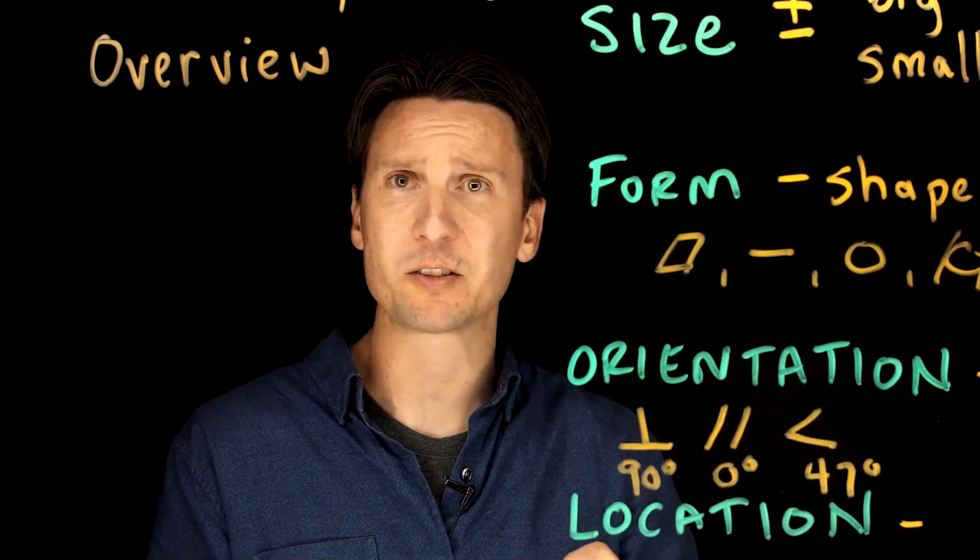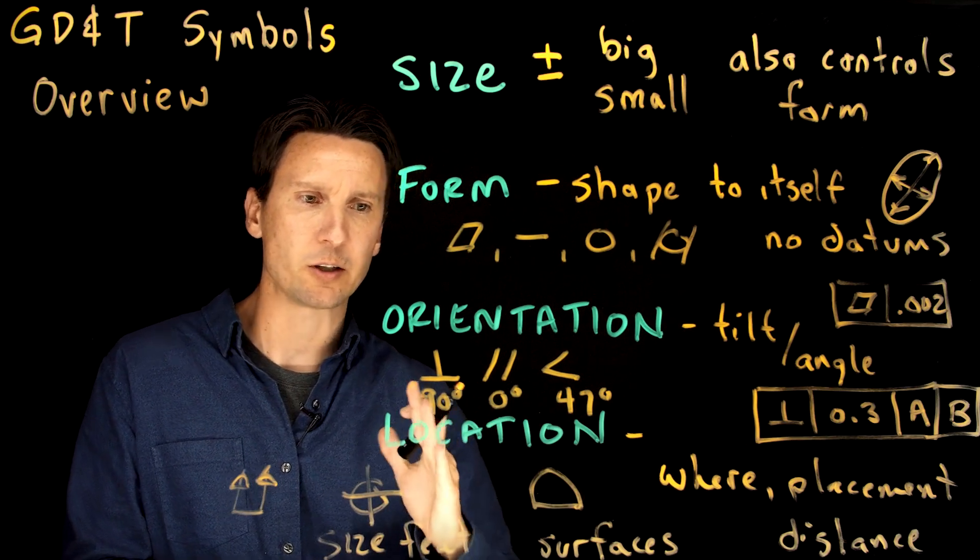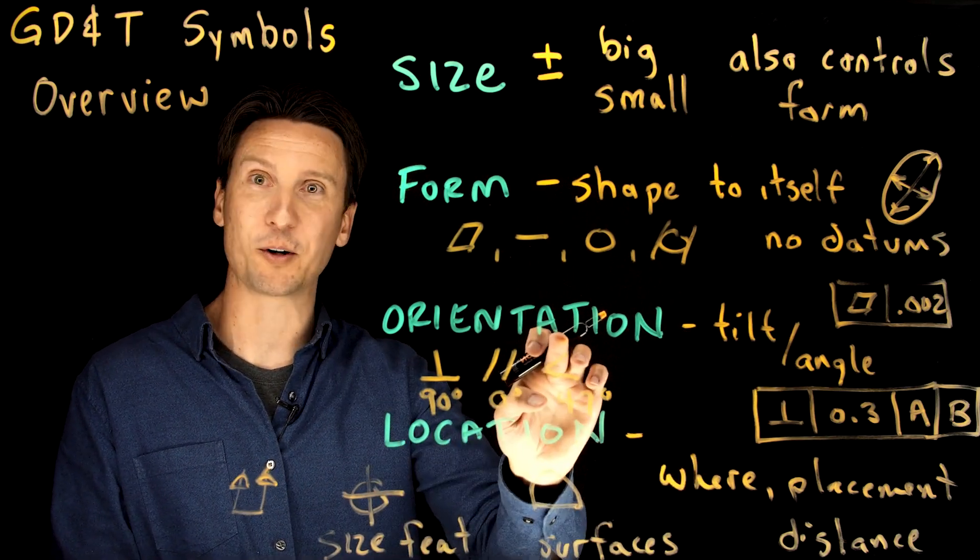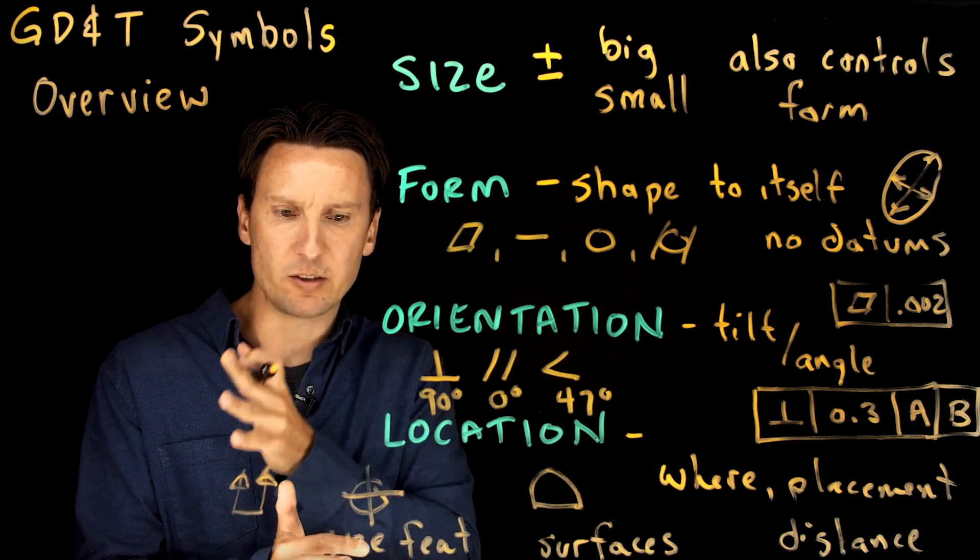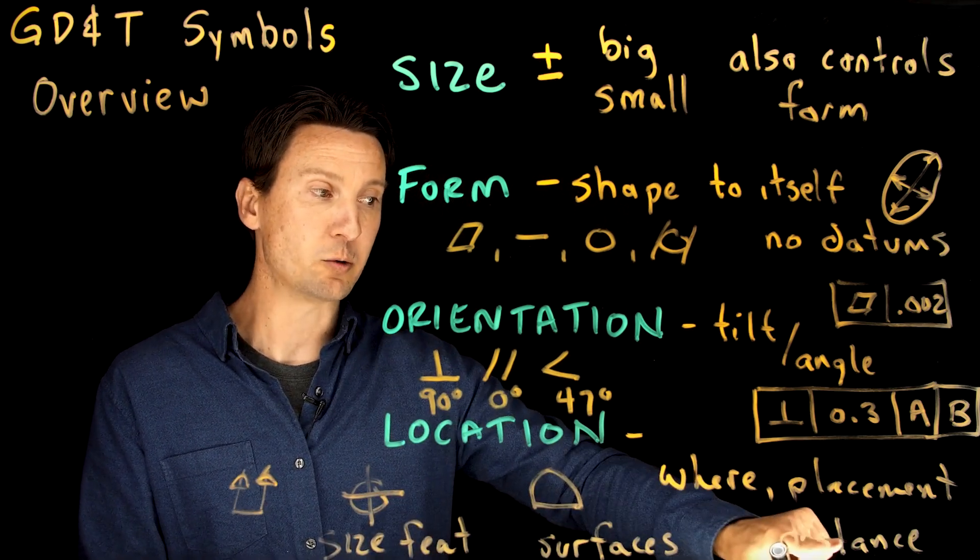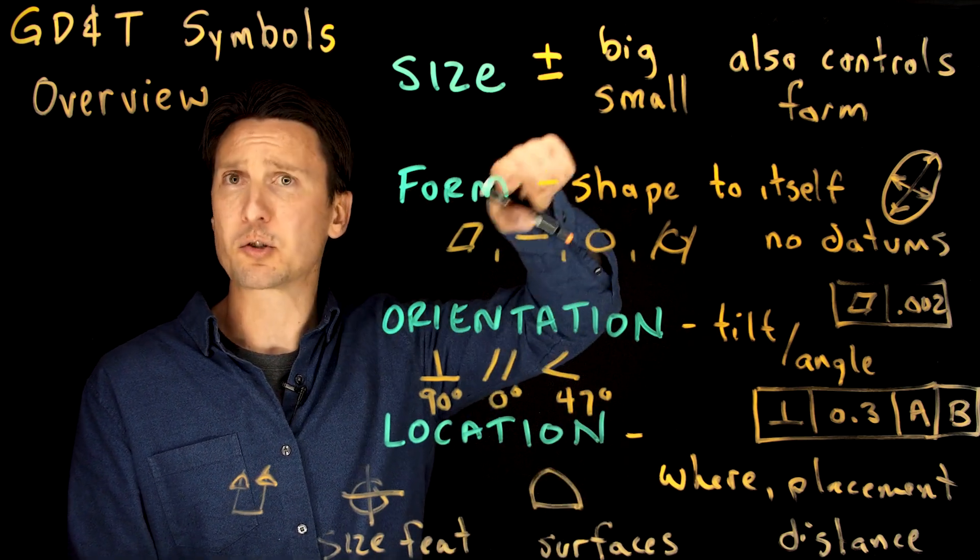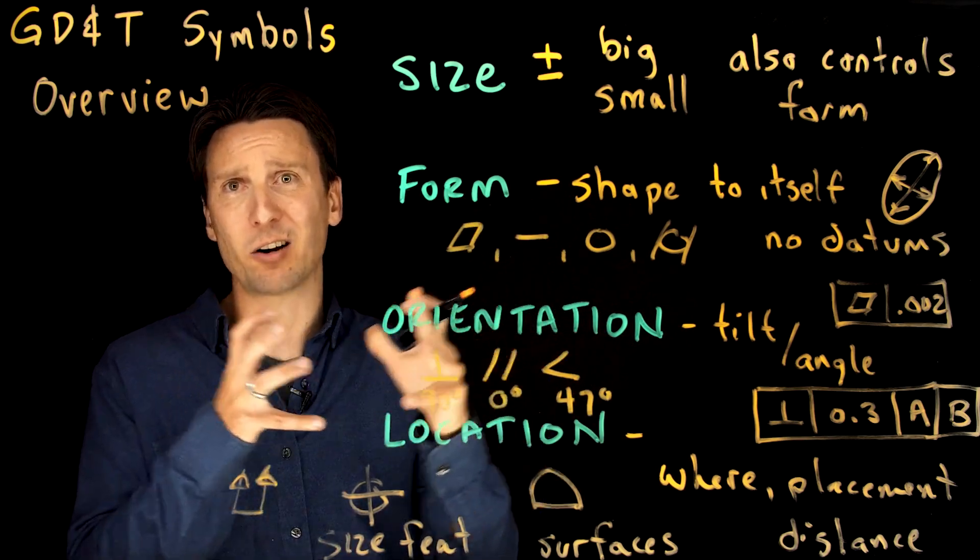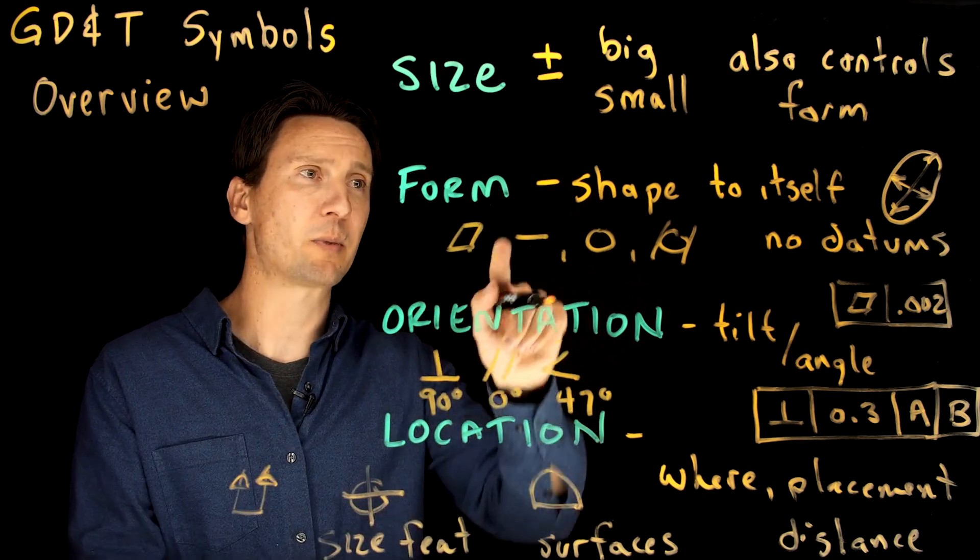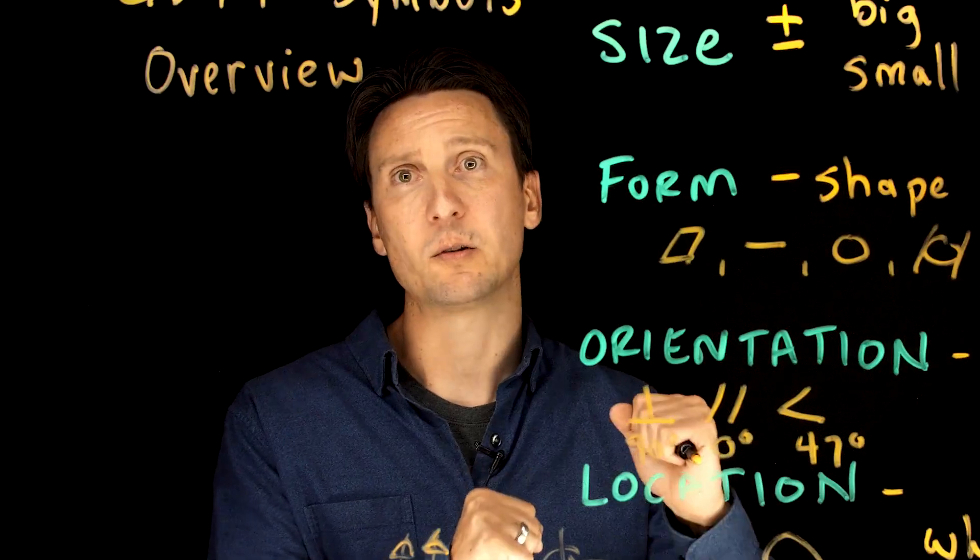Those are the main categories you want to think about with tolerancing. I ask questions, you know, what's important on your part? Oh, I care about how it's tilted or angled. Oh, then you probably need an orientation control. I care about where it is and like that's distance relative to something else. You said where, you said distance, you probably need a location control. And remember size tolerance controls form. So we don't need this a lot, but every once in a while you have a big size tolerance, you want to refine the form, sometimes that can be needed. But I'd say our big symbols we use all the time are position and profile.